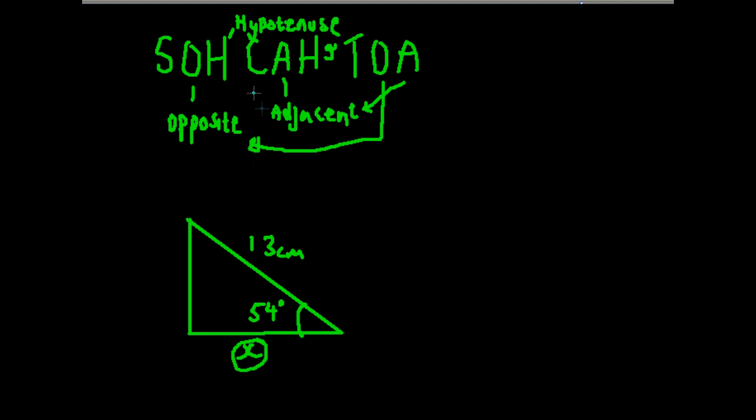Firstly, what I would do is label your sides - they all start from the angle. Adjacent to the angle is X, so this is adjacent. Opposite is obviously going to be opposite of the angle, so this is the opposite. And the hypotenuse is always the largest length, so label that H.